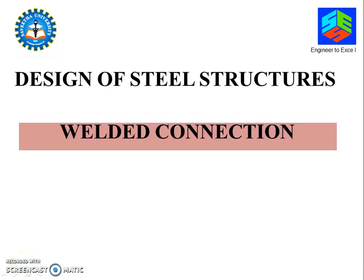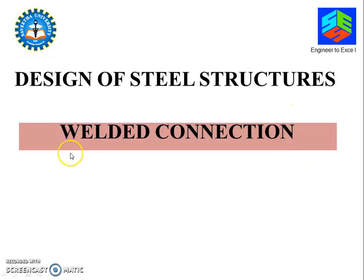Welcome back to another lecture. So far we have seen how to design a riveted connection and how to find out the strength of a joint. These are the fasteners — the riveted connection, bolts — and now we will discuss the bolted connection actually. Both have their own merits and demerits; in some cases we have to go for rivets and in some cases we have to go for welds.